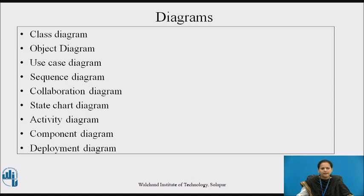A diagram is a graphical presentation of a set of elements, most often rendered as a connected graph of vertices — those are things — and arcs, which are relationships. UML includes nine such diagrams: class diagram, object diagram, use case diagram, sequence diagram, collaboration diagram, state chart diagram, activity diagram, component diagram, and deployment diagram.